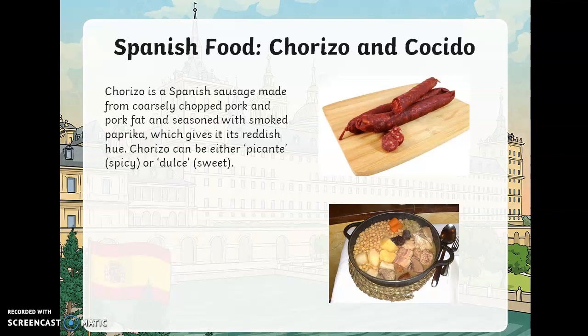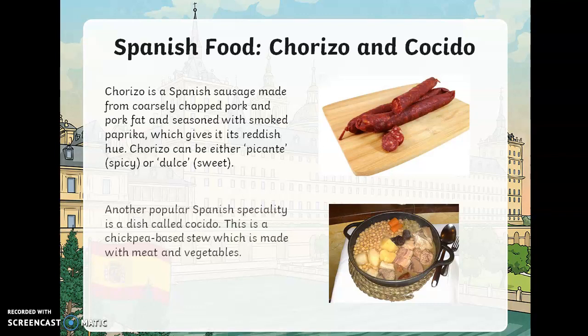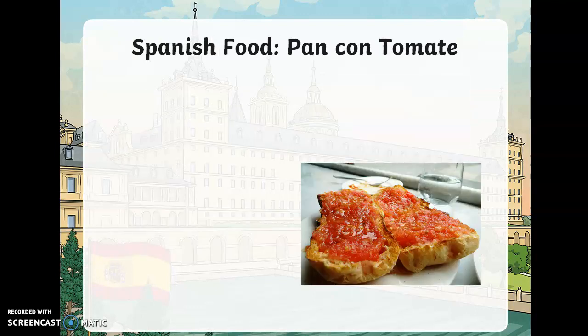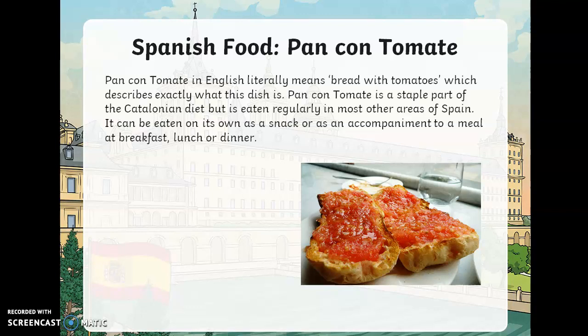Chorizo is a Spanish sausage made from coarsely chopped pork and pork fat, seasoned with smoked paprika, which gives it its reddish color. Chorizo can be either picante, which means spicy, or dulce, which means sweet. Another popular Spanish speciality is cocido, a chickpea-based stew made with meat and vegetables.